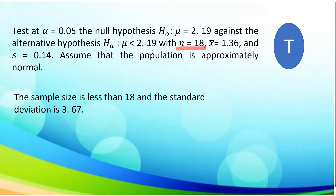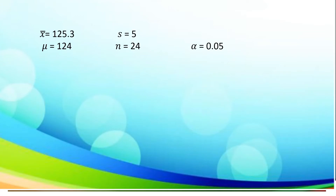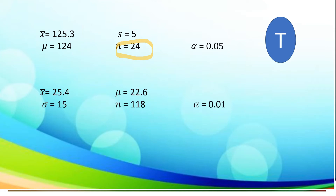Next, the sample size is 18 and the standard deviation is 3.67. Again, highlighting the given sample, which is 18 and is less than 30, the test statistic to apply is T-test. For another situation, the sample is 24, which is less than 30. Therefore, the test statistic is T-test. And for the next, the number of samples is more than 30. Therefore, the test statistic is Z-test.